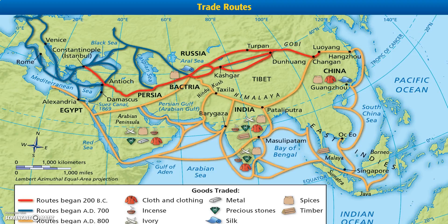Here is a map that shows trade routes from a long time ago. The red lines are routes being used 200 B.C., about 2,200 years ago. The blue lines are routes started about 1,300 years ago, and the yellow ones are the most recent, used about 1,200 years ago. You can see some of the goods they were trading: cloth and clothing, incense, ivory, metals and stones, silks — really important for making clothes — and spices and timber, which were all very valuable.